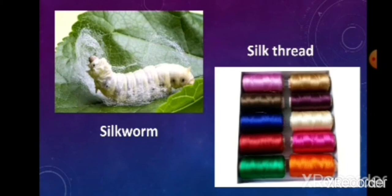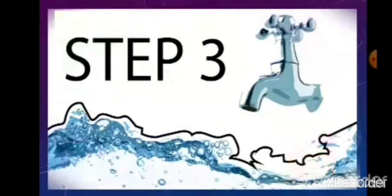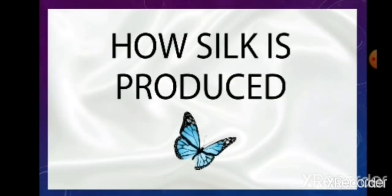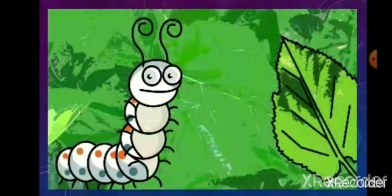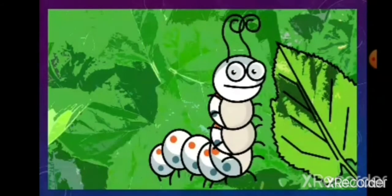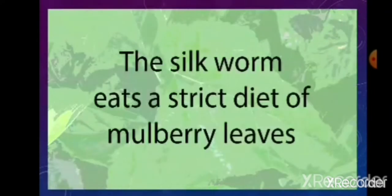Let's see a small video which shows you how silk is produced. This is a silkworm. Step 1: the silkworm eats a strict diet of mulberry leaves.